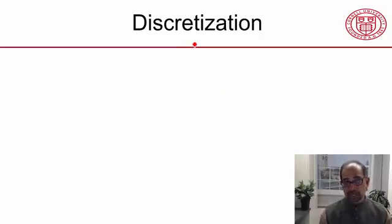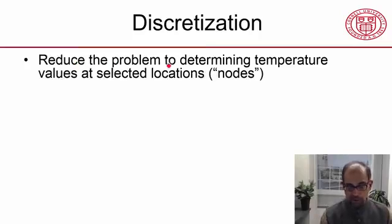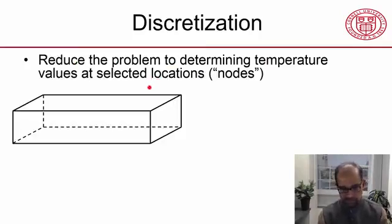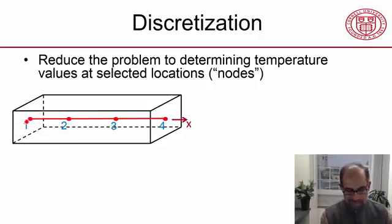The first thing we do is discretization. Let me unpack that idea. We reduce the problem to determining temperature values at selected locations. That's the bar I have and I need to determine the temperature along that line. I've reduced it to a one-dimensional problem, so I need to determine temperature only along the line. So I need to determine the function t of x.